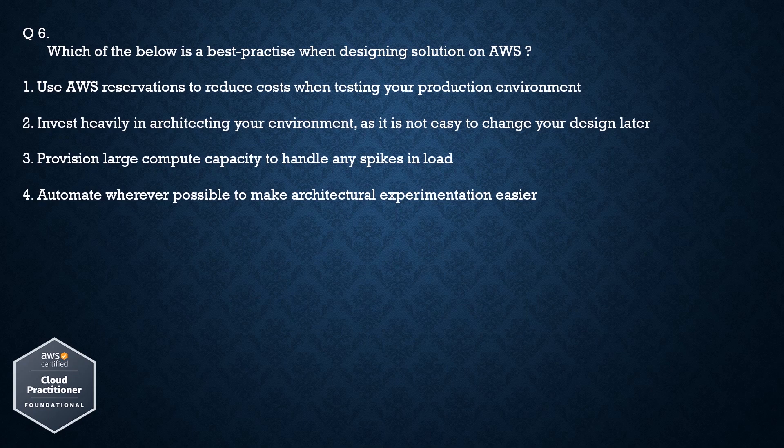Question number 6: Which of the below is the best practice when designing a solution on AWS? Option 1: Use AWS reservations to reduce costs when testing your production environment. Option 2: Invest heavily in architecting your environment, as it is not easy to change your design later. Option 3: Provision large compute capacity to handle any spikes in load. Option 4: Automate wherever possible to make architectural experimentation easier.